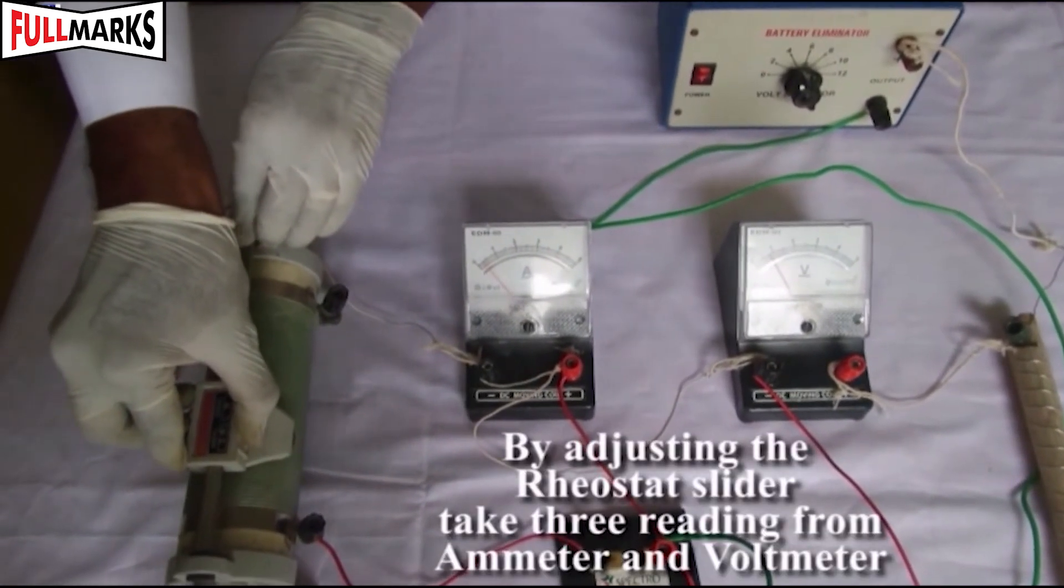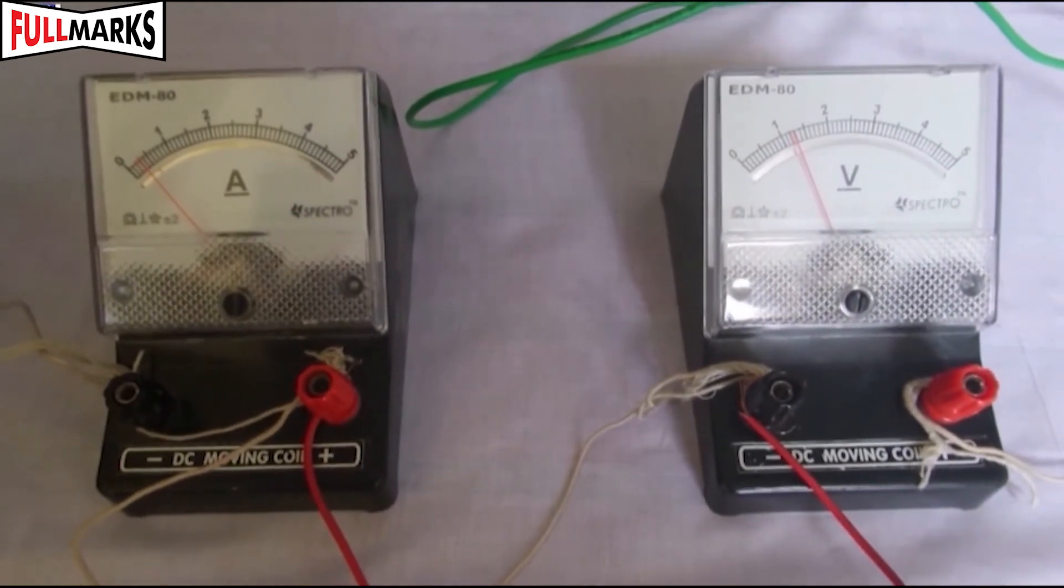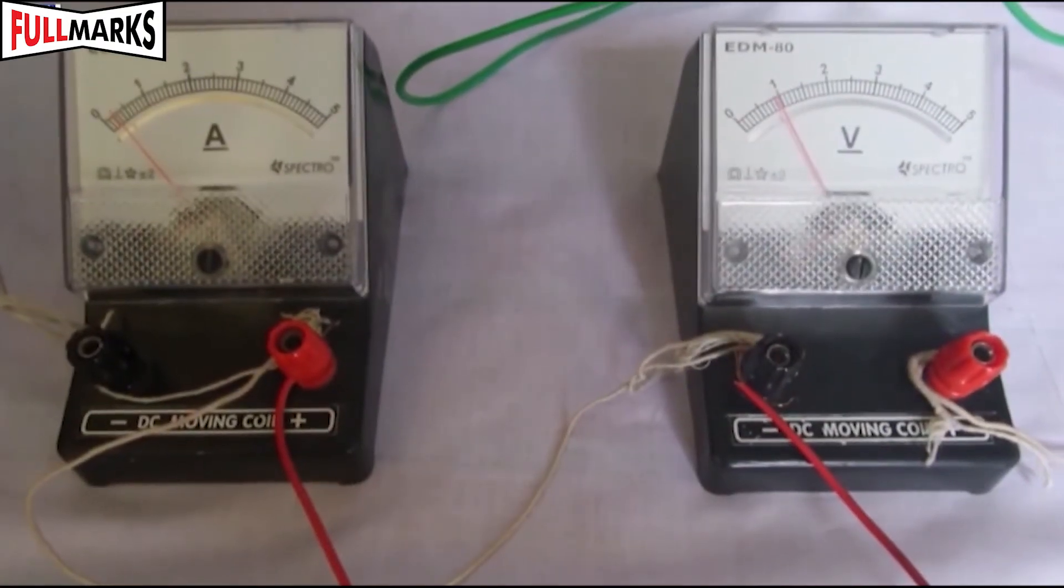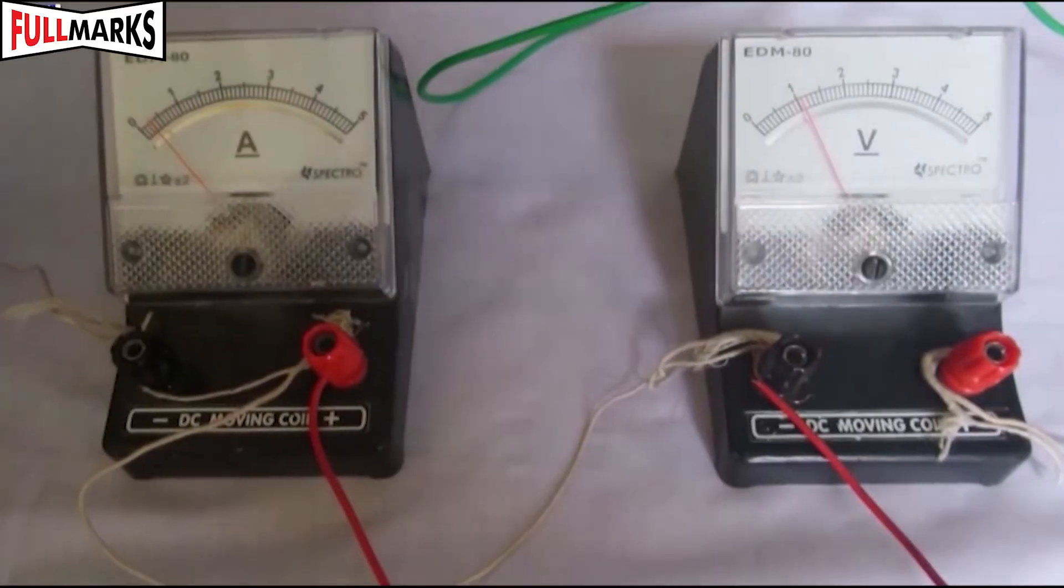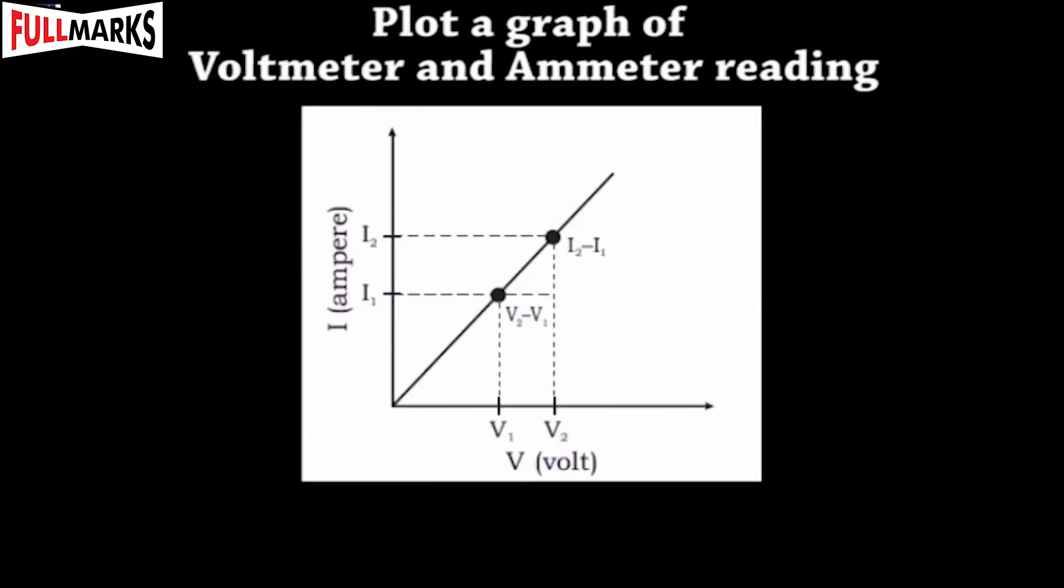Record your observations in the observation table. The graph of voltage and current is a straight line. This shows that voltage is directly proportional to current.